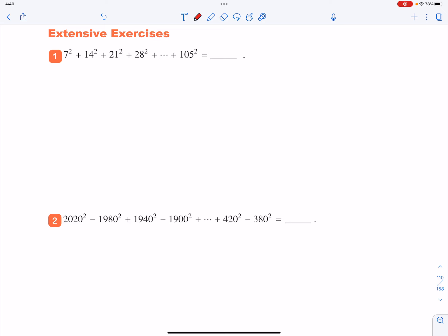Extensive exercise is question number 1. As for this one, we need to get the sum of 7 squared, 14 squared, 21 squared, all the way to 105 squared.